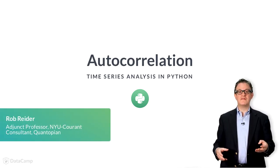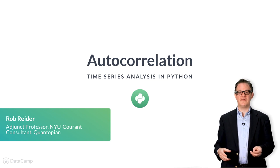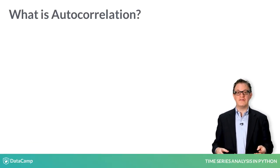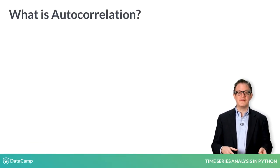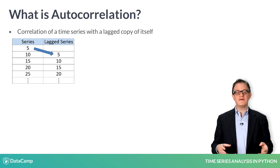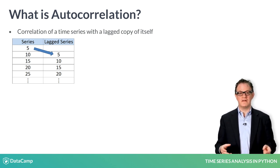So far, you have looked at the correlation of two time series. Autocorrelation is the correlation of a single time series with a lag copy of itself. It's also called serial correlation.